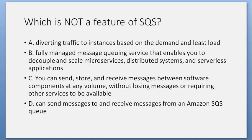Which is not a feature of SQS? A. Diverting traffic to instances based on demand and least load. B. Fully managed message queuing service that enables you to decouple and scale microservices, distributed systems, and serverless applications. C. You can send, store, and receive messages between software components at any volume without losing messages or requiring other services to be available. D. Can send messages to and receive messages from Amazon SQS. Answer: A. Diverting traffic to instances based on demand and least load.